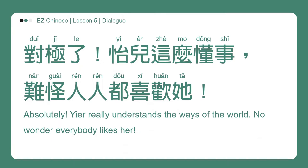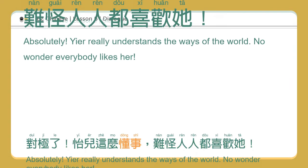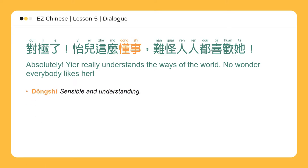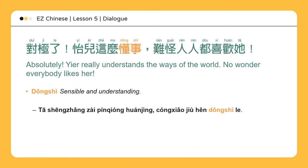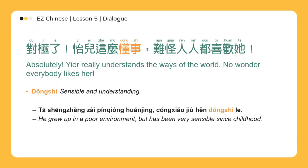对极了，宜儿这么懂事，难怪人人都喜欢她。Absolutely! She really understands the ways of the world — no wonder everybody likes her. 懂事 means sensible and understanding. 他生长在贫穷环境，从小就很懂事了。He grew up in a poor environment but has been very sensible since childhood.